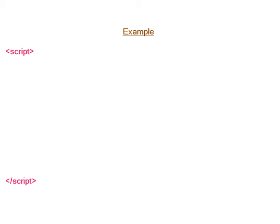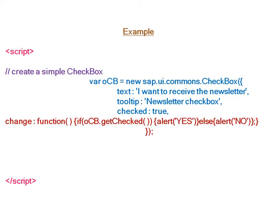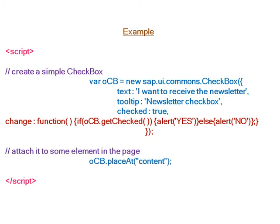Coming to the example — creating a simple checkbox. We have written the constructor, and the text is 'I want to receive the newsletter', with the tooltip set to 'newsletter checkbox'. We have set checked to true, so as you see the result in the browser, the checkbox is already checked. For the change event, we have written a function that alerts: if checked, show 'Yes'; if unchecked, show 'No'. We attach this element to the UI area using the same ID 'content'.